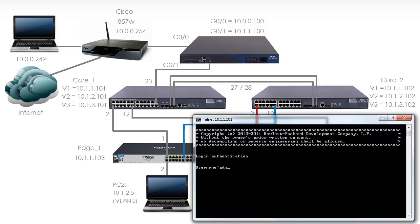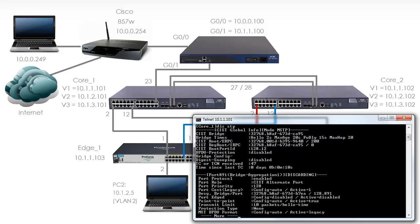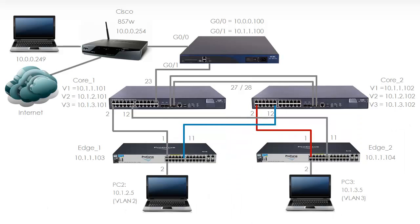I'm now able to telnet back to the switch. So there's Core 1. Display STP shows me that this switch is the root of the local spanning tree, but the spanning tree for the entire topology is another switch. Let's configure Core 2.